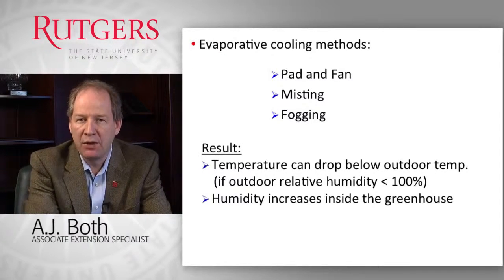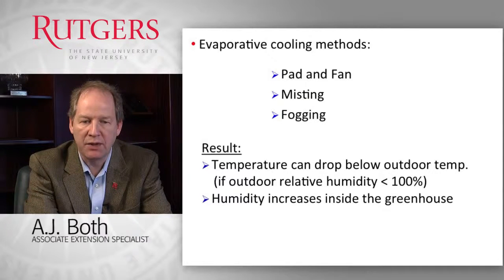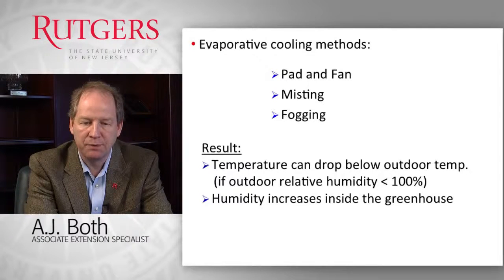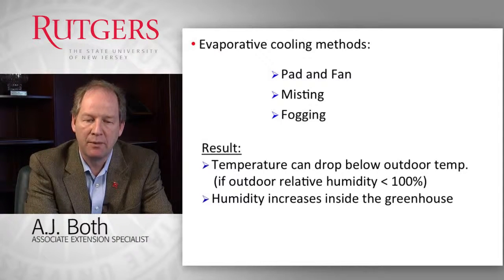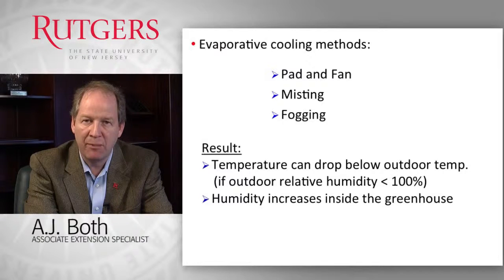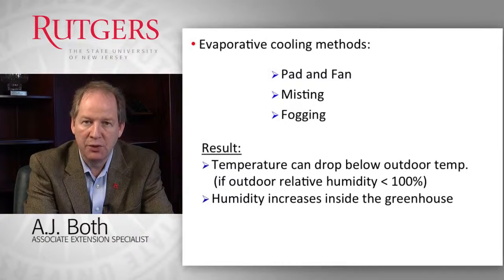There are several ways that we can use evaporative cooling in greenhouse applications. The first one is the pad and fan system, followed by misting and fogging. By evaporative cooling we drop the outdoor temperature as it comes into the greenhouse, provided the incoming air is not already saturated, because if it is already saturated we can no longer evaporate more moisture into it. By doing this evaporation process, we increase the overall humidity inside the greenhouse, which could be an issue depending on what strategy you want to use to grow your crops.